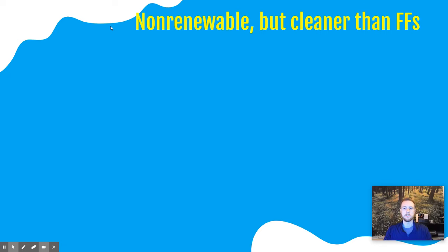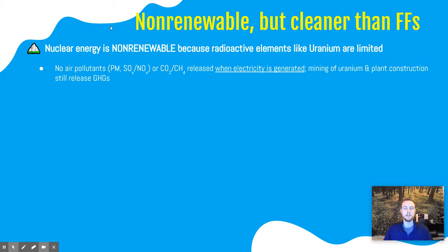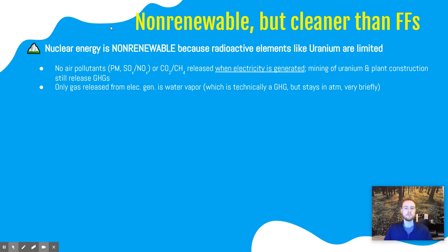Next, we'll look at why nuclear energy is considered a cleaner alternative to fossil fuels, but also why it's a non-renewable energy source. It's non-renewable because the fuel source — radioactive elements like uranium or plutonium — are limited, existing in finite quantities on Earth and will eventually run out. One reason nuclear is considered cleaner is that there are no air pollutants released at the point of electricity generation. The mining process and construction of the power plant do release carbon dioxide, but when we actually generate the electricity, there are no air pollutants — no particulate matter, no SOx or NOx, no carbon dioxide or methane released. The only gas released is water vapor.